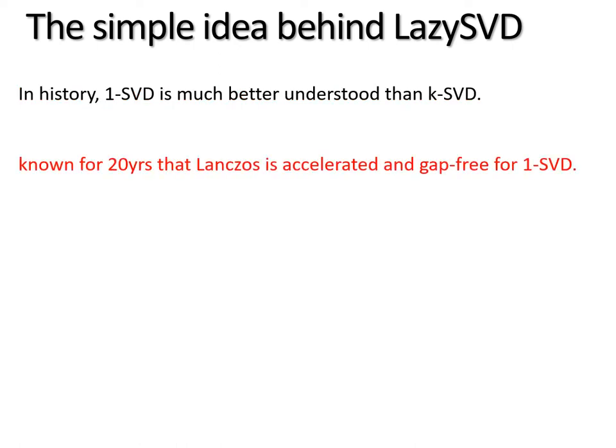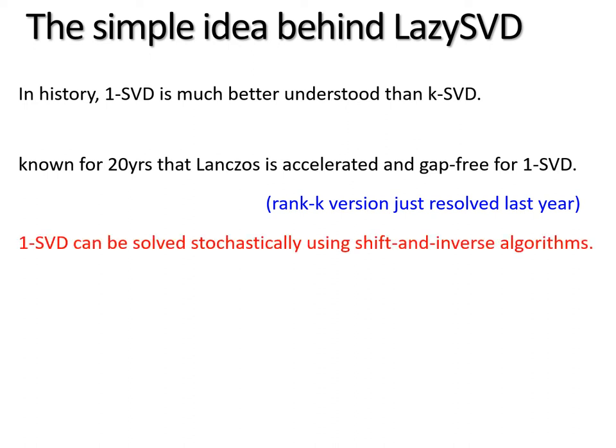Here is our simple intuition behind the new framework. In history, 1SVD is much better understood than kSVD. For instance, Lanczos method has been known for at least 20 years to be accelerated and also gap-free, but nothing is known for the rank k version until last year. And 1SVD can be solved stochastically using shift and inverse, but this doesn't work for rank k.